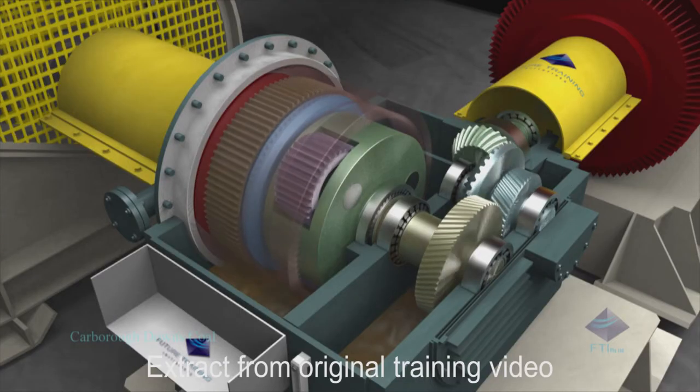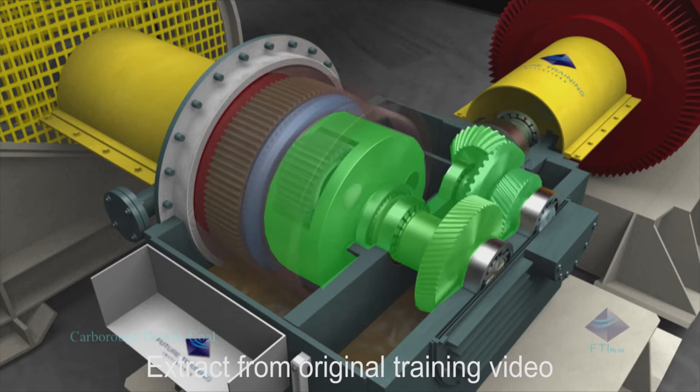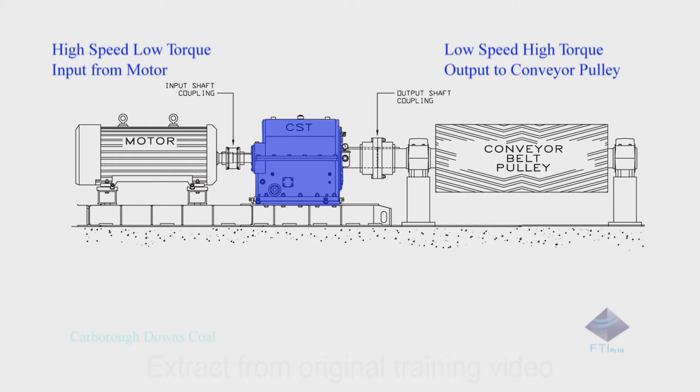Control start transmissions incorporate a planetary reduction gearbox and hydro viscous clutch. The CST reduction gears convert the motor's high speed low torque input to a low speed high torque output.